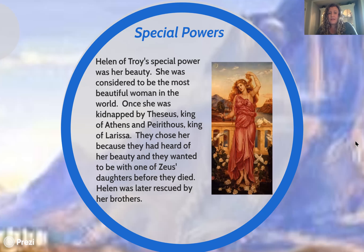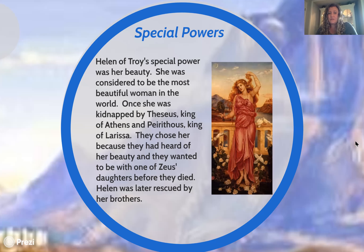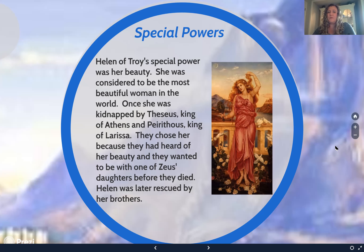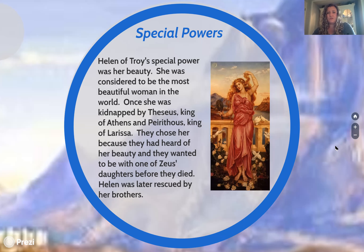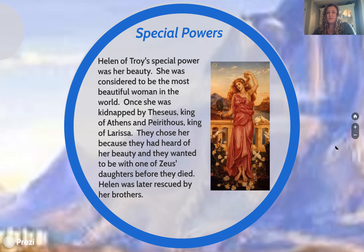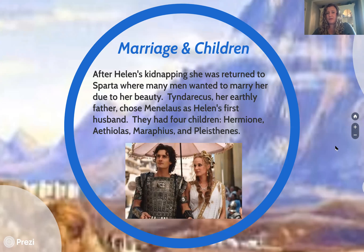She was kidnapped by Theseus, who was king at the time. They chose her because they wanted her beauty and wanted to be connected to Zeus, and they thought she was the answer. Helen was later rescued by her brothers in this specific story, and after being kidnapped she returned to Sparta.